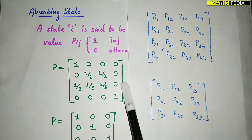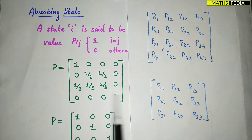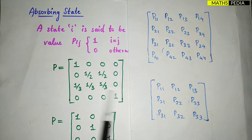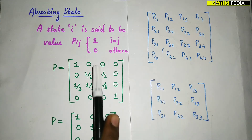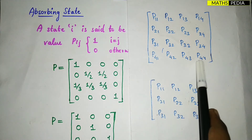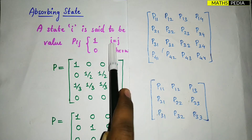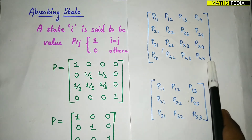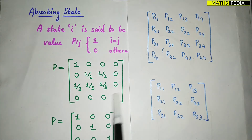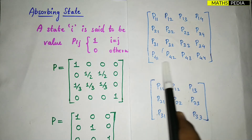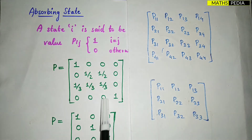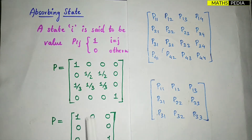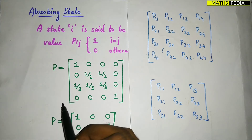Let us see the last row of the P matrix, which is the fourth row. Here P44 — i and j are equal, so 4 and 4 are equal — the P44 value is 1, and the other elements are 0. So observe this: the other elements are 0.